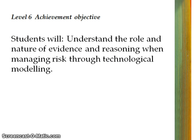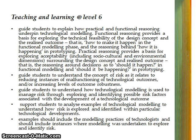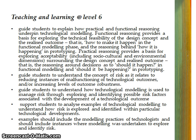Let's begin at level 6 of the curriculum. The achievement objective is around understanding the role and nature of evidence and reasoning when managing risk in modelling. Students would need to understand what is modelling before they actually undertake level 6 — they need to understand different types of modelling, what we find out from different types of modelling, who uses different types of information at what stage, and how does it help us to manage risk. As a teacher, you need to guide students around understanding these concepts and support them to analyse some examples, so that they understand risk and identify those sorts of things within a technological development, in order to be able to do that in their own practice.